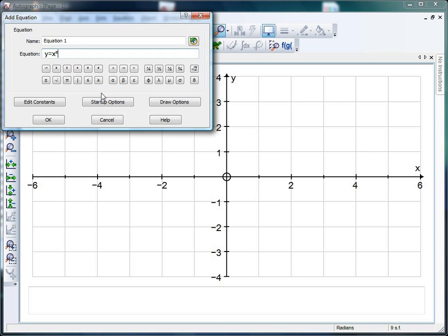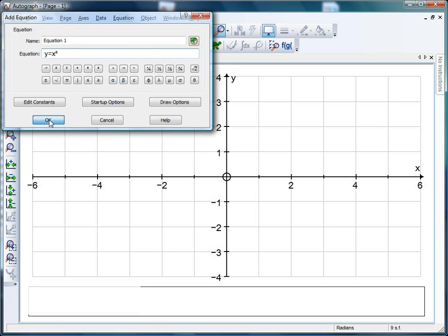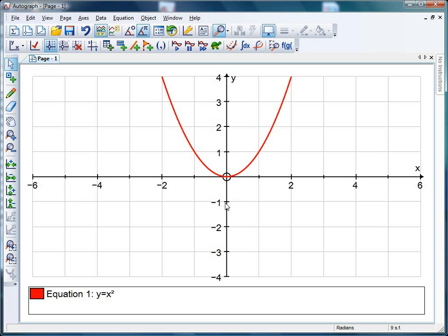Now of course, as we say every week, it's important for the students to predict what the curve is going to look like, where it goes through, the shape, all that kind of stuff. But we'll assume I'm happy with that and click OK. What I want Autograph to do first is work out the area underneath this curve, between the curve and the x-axis from (0,0) to (1,0).